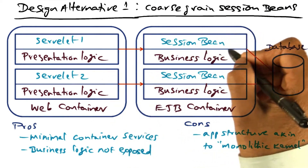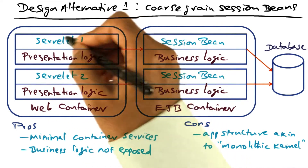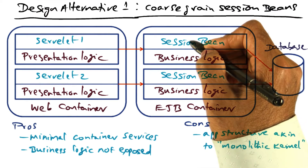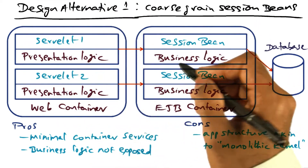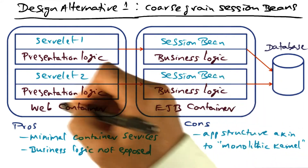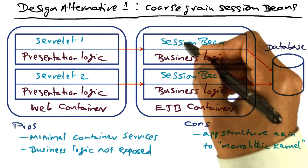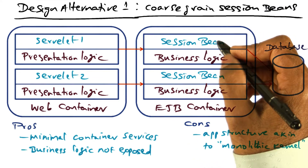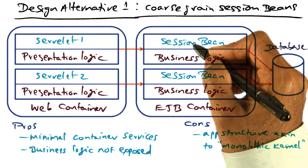There is a coarse grain session bean that is associated with each of these servlets. The session bean corresponds to the client that is being served through servlet number one, and similarly, servlet number two is served by a session bean. As the name suggests, the session bean is responsible for the specific needs of the particular client that it is serving for this particular session.